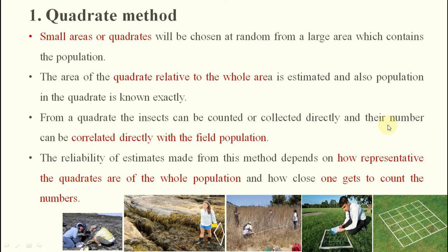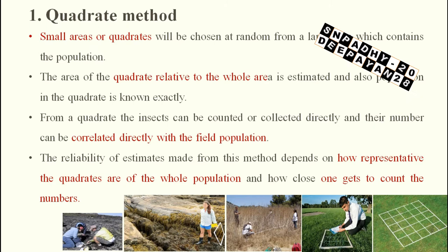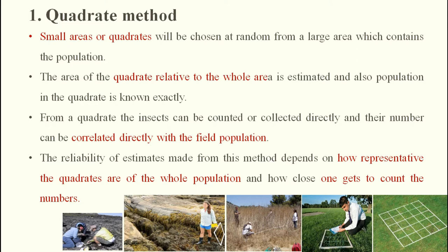The insect can be counted and collected directly from the quadrat and the number correlated with field population. The reliability of estimates depends on how representative the quadrats are — a quadrat should not have the highest or lowest population, it should be intermediate, so that average data is obtained. The observer's counting effectiveness also affects accuracy.